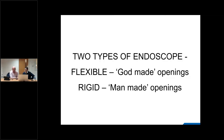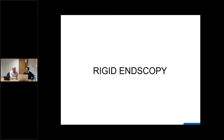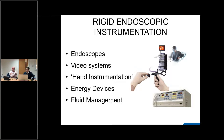A good example is a flexible versus a rigid cystoscope — a cystoscope is used to look inside the bladder or urinary tract. Speaking as a male, one in three have prostate enlargement, so there's a possibility of needing a cystoscopy — I would much prefer a flexible instrument than a rigid one. Rigid procedures are generally done under general anaesthetic. We're only really talking about rigid instruments in this presentation.